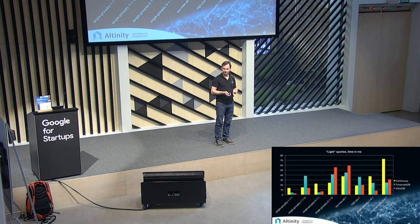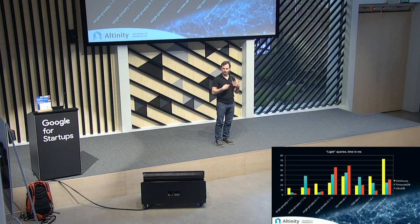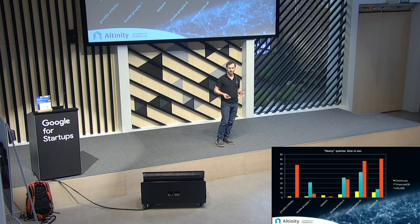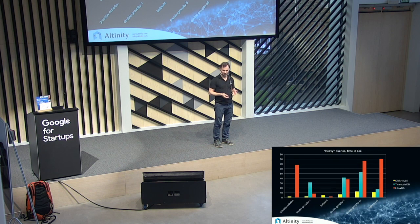ClickHouse was faster or on par with these databases on most queries. Sometimes it was a little bit slower, but only on sub-10 millisecond queries. For heavier queries doing complex calculations, ClickHouse was already far ahead of InfluxDB and TimescaleDB. You can find these benchmarks at the Altinity website, or try to reproduce them yourself.